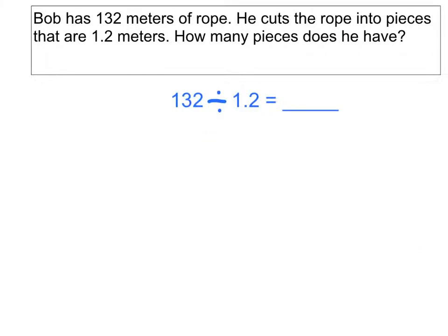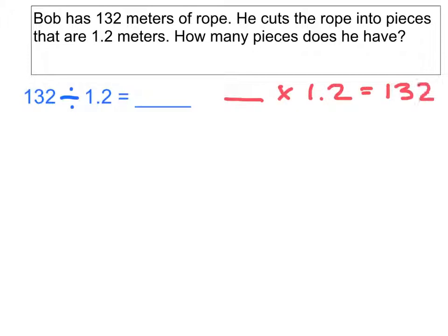Now that we're in the practice, they're going to go a little bit quicker. So let's take a look at our second problem. Here we have Bob has 132 meters of rope. He cuts the rope into pieces that are 1.2 meters. How many pieces does he have? So here you can see that we've laid out the equation. 132, the total amount of rope, divided by 1.2, which is the size of each piece of rope. And we're trying to determine how many pieces he has in all. Remember, sometimes it's helpful to rewrite this as multiplication. So I'm going to rewrite it as blank times 1.2 equals 132.